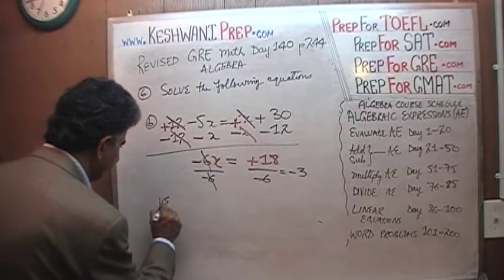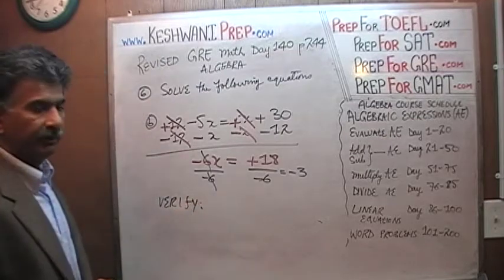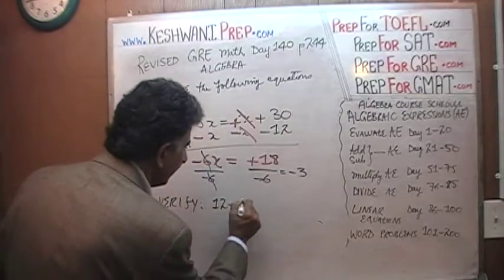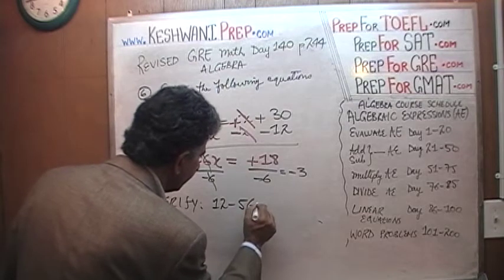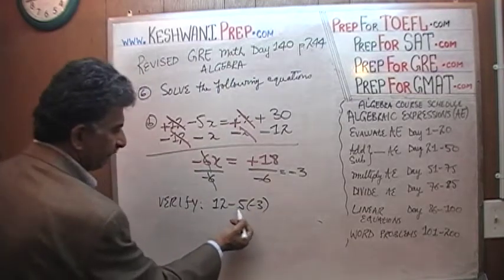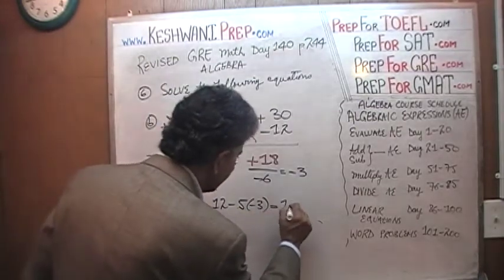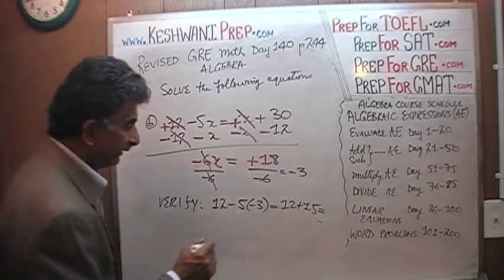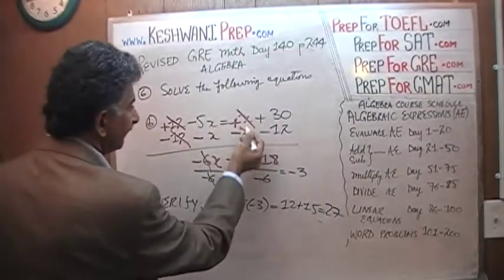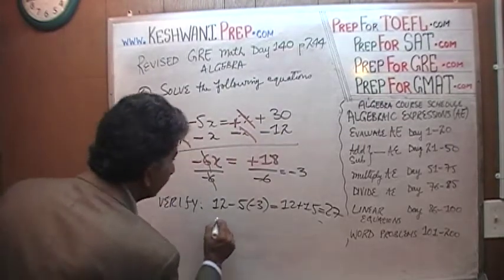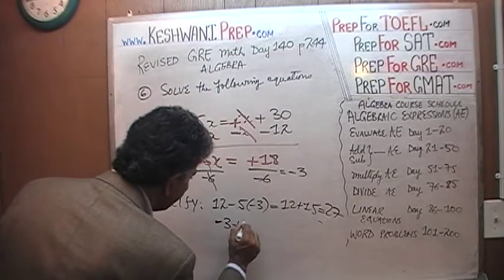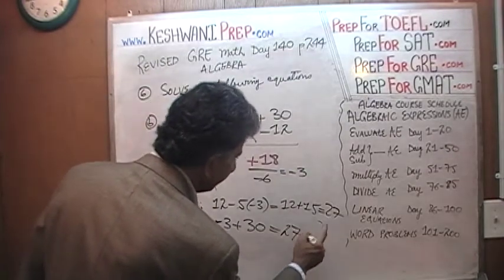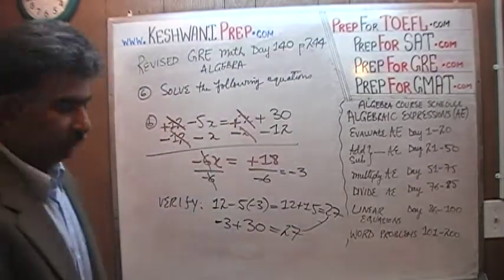Let's verify it to make sure we have the right answer. 12 minus 5x — x is negative 3, so a negative 3 times a negative 5 is a positive 15, and we end up with 12 plus 15, which is 27. On the other side, x plus 30: negative 3 plus 30 is also 27. They match — it works, it is the right solution.